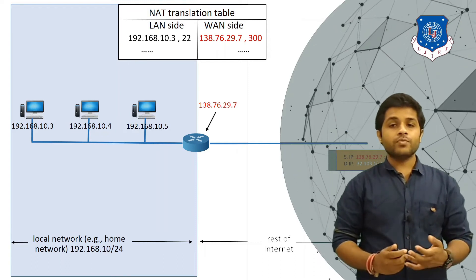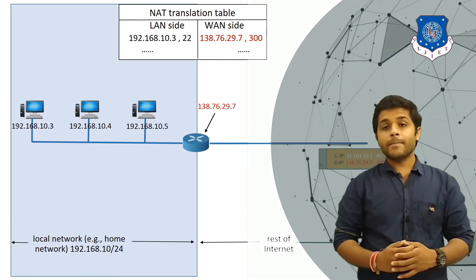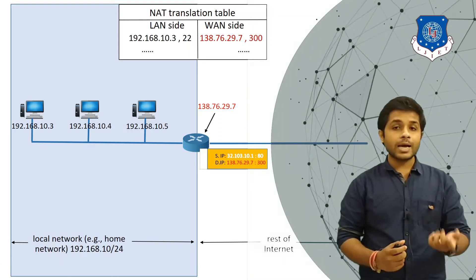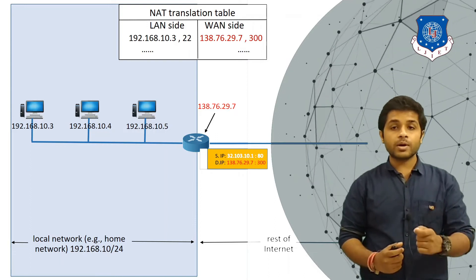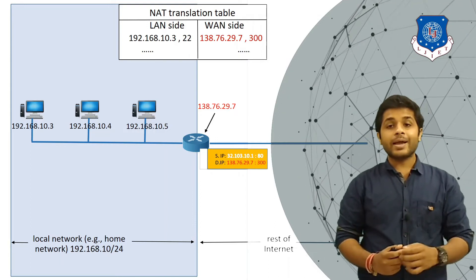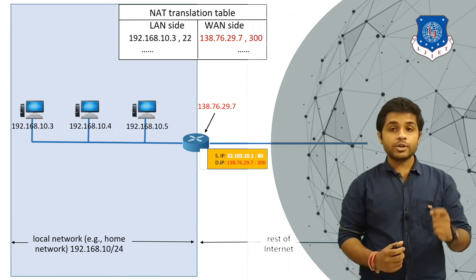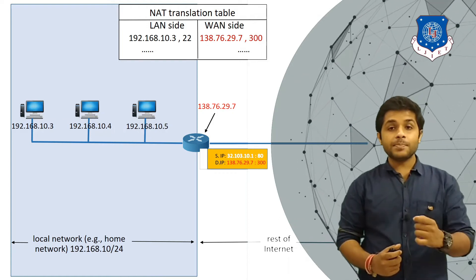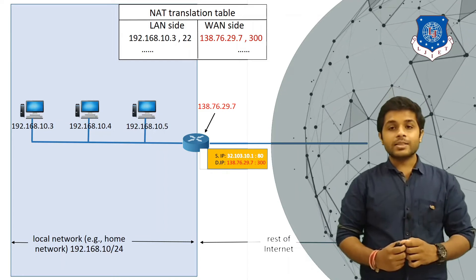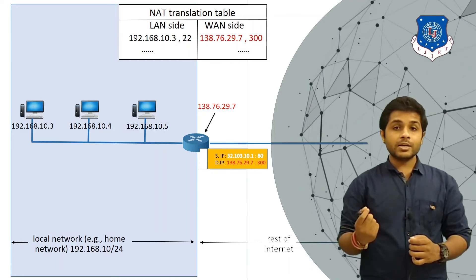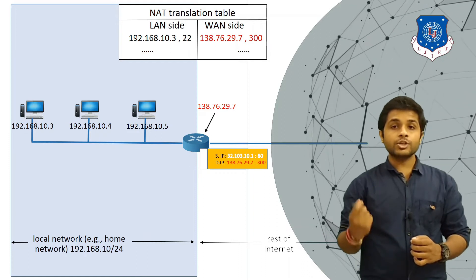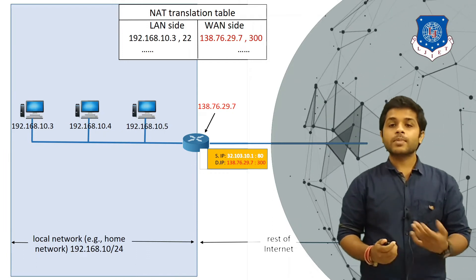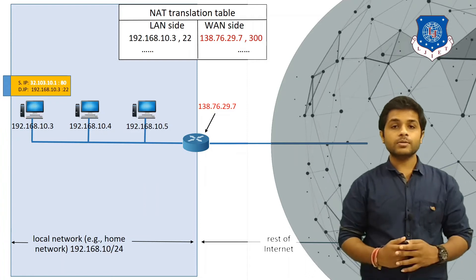The destination replies with a message having source IP 32.103.10.1 with port 80, and the destination IP is 138.76.29.7 with port 3300 — which is the router's IP. The router knows it had converted 192.168.10.3 to 138.76.29.7, so it makes the reverse change to the message and delivers it to the correct device.